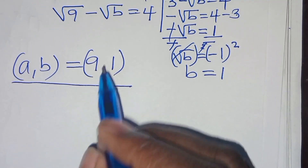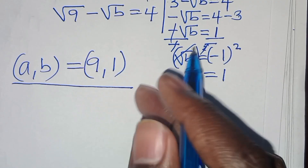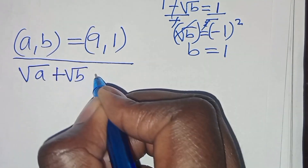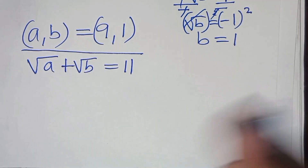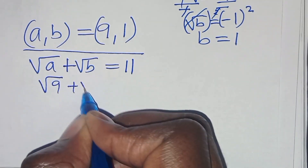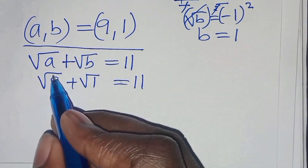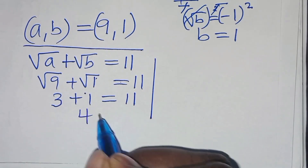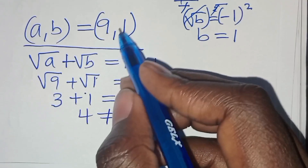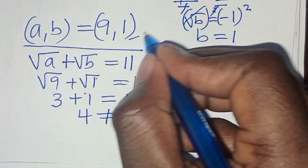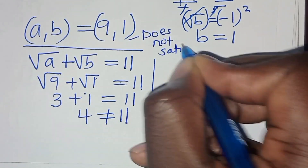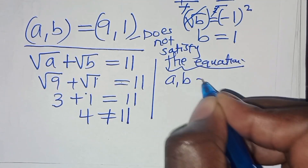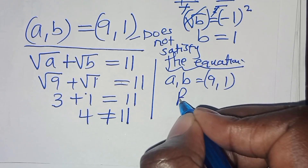Let's verify Case 1 (a=9, b=1). Substituting into equation 1: √9 + √1 = 3 + 1 = 4, which is not equal to 11. So this solution does not satisfy the equation. Therefore, the Case 1 solution (9, 1) is rejected.